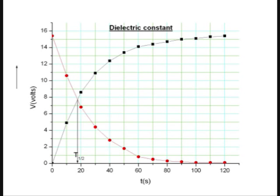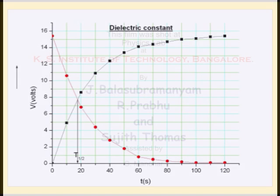Now plot the voltage against time for both charging and discharging on the same graph sheet. From the point of intersection of the two curves, draw a perpendicular onto the time axis to determine t-half. Use t-half in the formula to determine the dielectric constant of the dielectric material used in the capacitor.